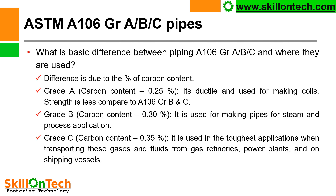ASTM A106 grade A, B, and C pipes are very generally used because these are carbon steel pipes used across all industries. What is the basic difference between A106 grades A, B, and C, and where are they used? The difference is due to the percentage of carbon content. Grade A pipe has carbon content of 0.25%; it is ductile and used for making coils, with lower strength compared to grades B and C. Grade B has carbon content of 0.30% and is used for making pipes for steam and process applications at high temperature services.